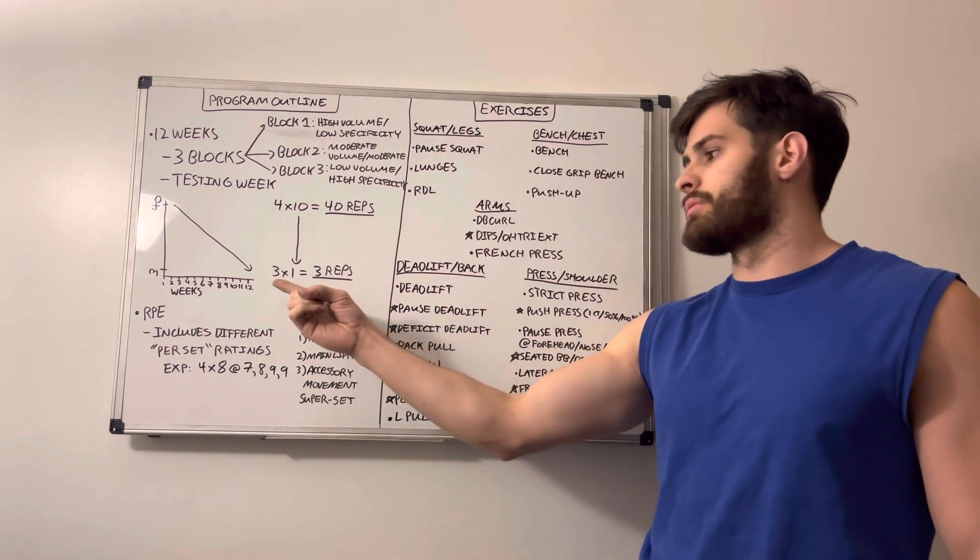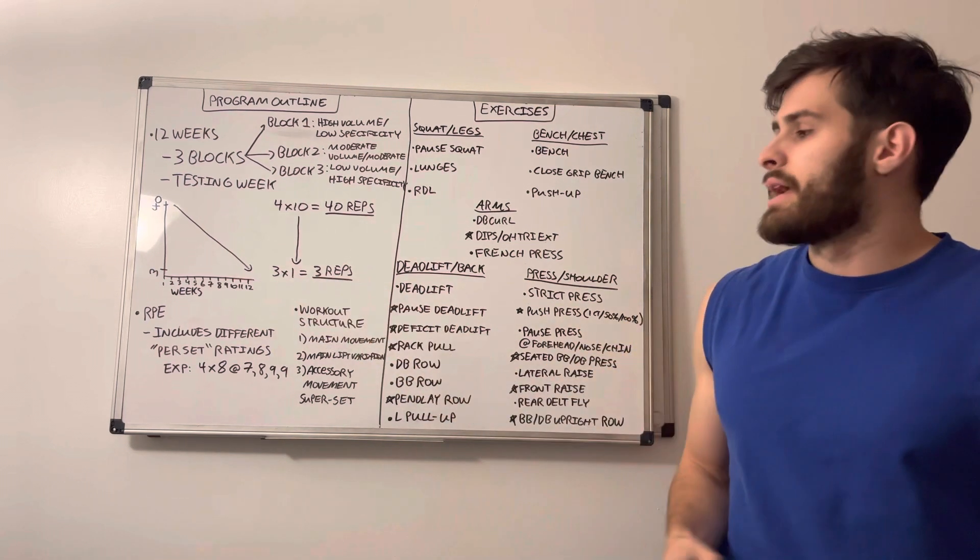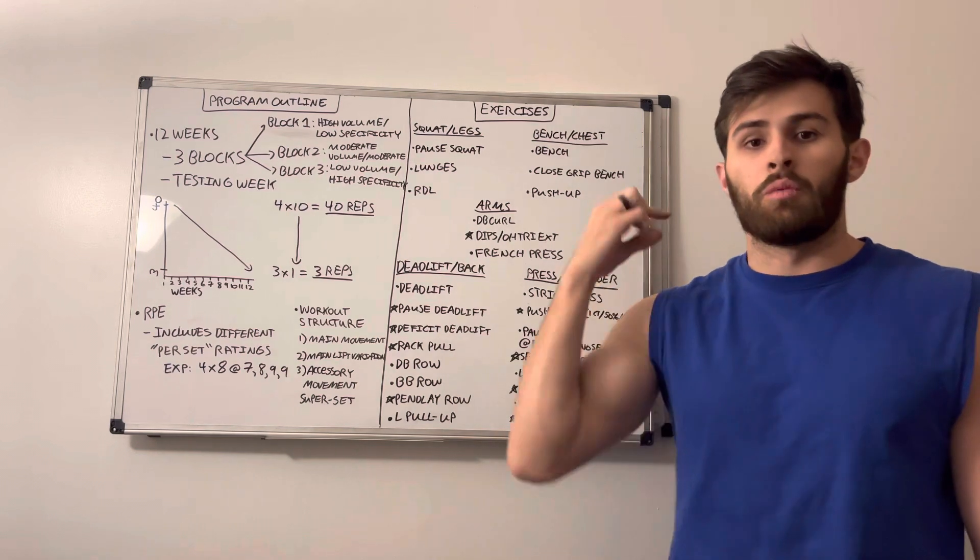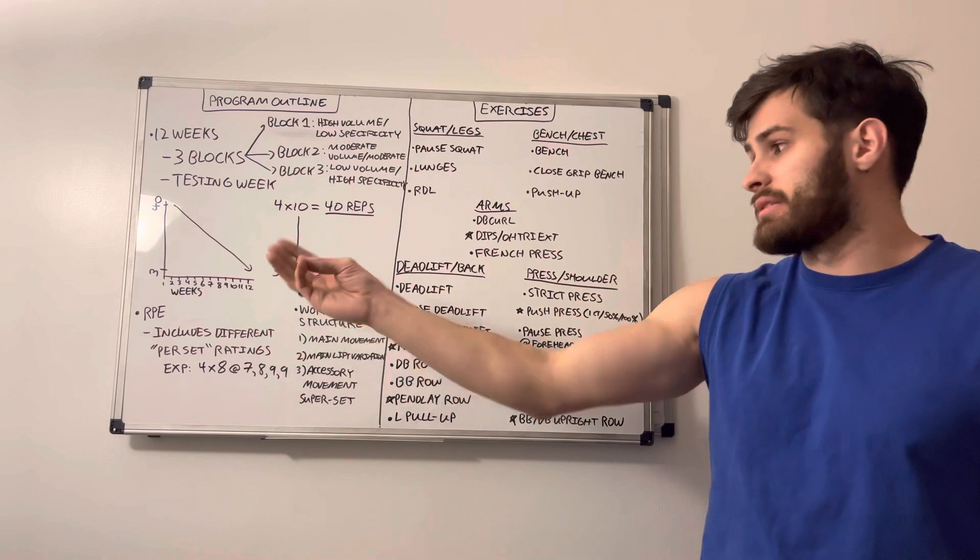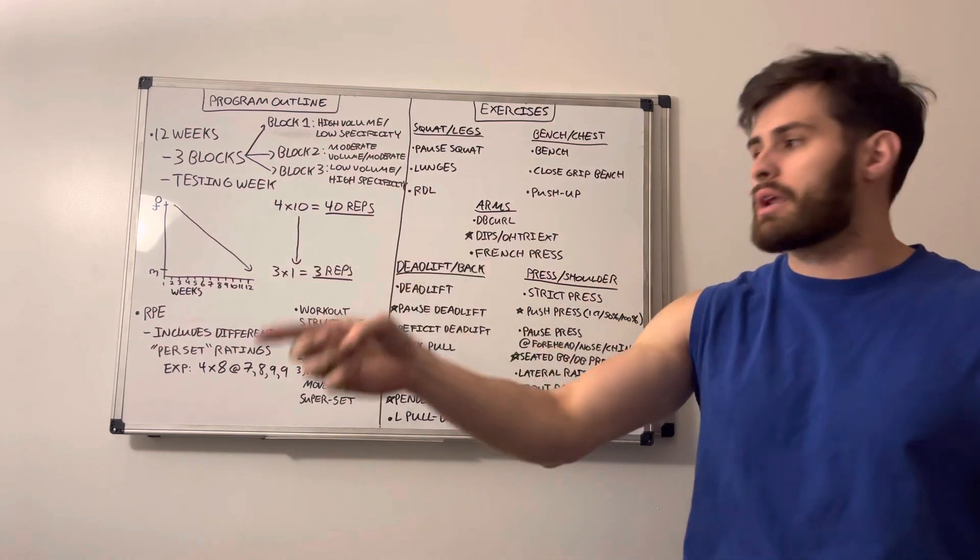And this will be when we test on our testing week. And we'll have three attempts for a personal best of one rep for working up to an intense single, three intense singles. So three reps will be the bottom end.